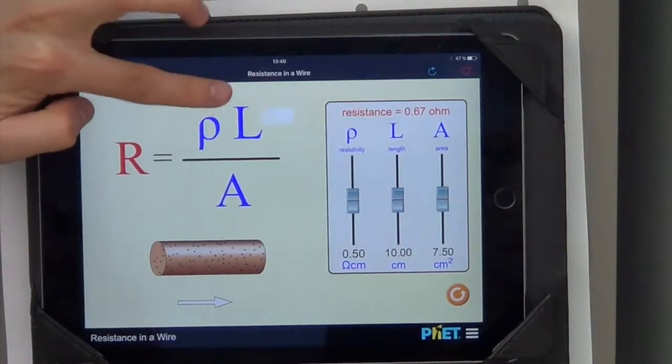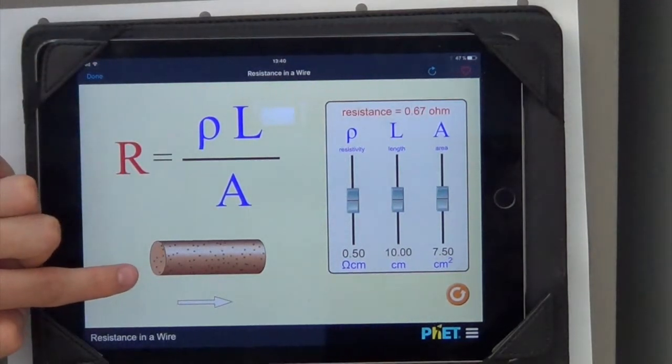So resistivity, length, and area - and here is a diagram of what's actually happening.